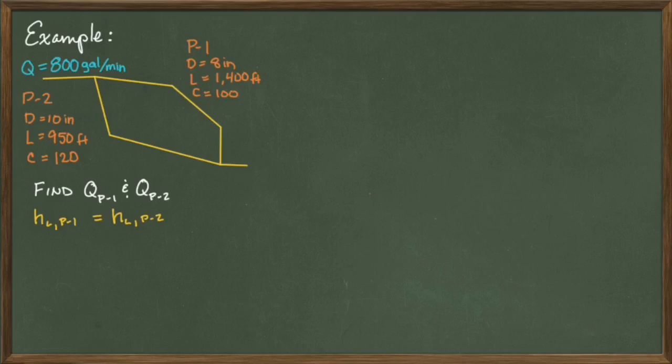First, we know that the head loss in pipe 1 is equal to the head loss in pipe 2. Also, we know that the flow rate in pipe 1 plus the flow rate in pipe 2 is equal to the original 800 gallon per minute flow rate entering the flow split.